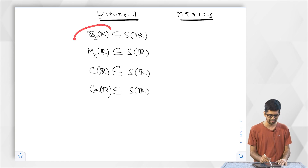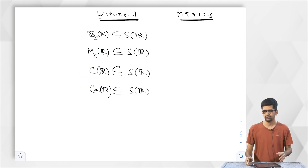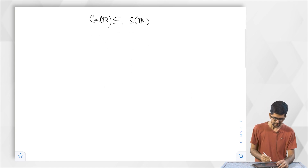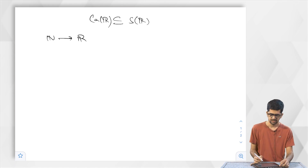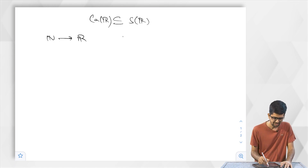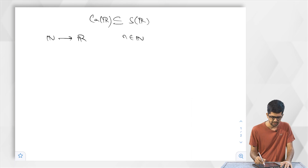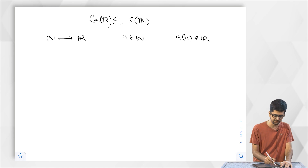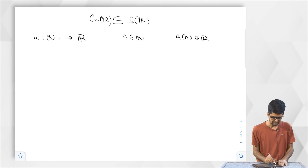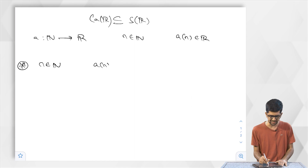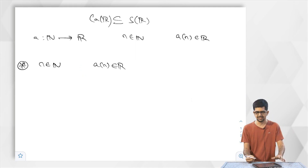What is a sequence? A sequence is just a map from N to R — that was the definition. For each element n belonging to N, it should give an element A_N in R. This is the description we are looking for.